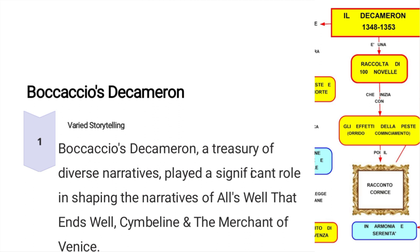The next work is Boccaccio's Decameron. Boccaccio's Decameron, a treasury of diverse narratives, played a significant role in shaping the narratives of All's Well That Ends Well, Cymbeline, and The Merchant of Venice. The Decameron is a collection of stories and it is a source for many of Shakespeare's plays.